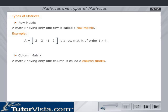A matrix having only one column is called a column matrix. Consider the same matrix A equals 2, 3, minus 1, 2. If we rearrange the elements in a column, we get a column matrix of the order 4 by 1.